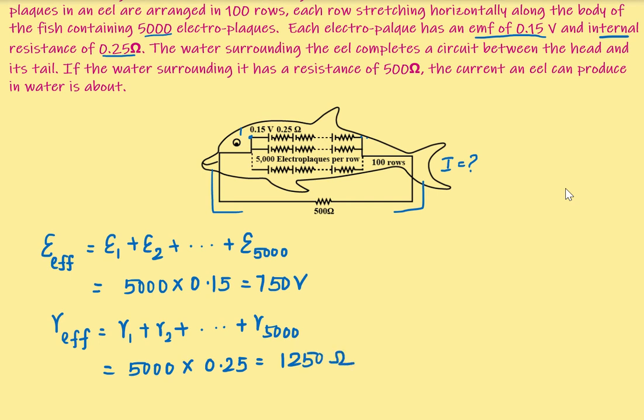Now let's draw the equivalent circuit of each row. Because we have calculated, each row has effective EMF 750V with internal resistance 1250Ω. So this, there is the second row, 100th row, and like that goes up to 100 rows.